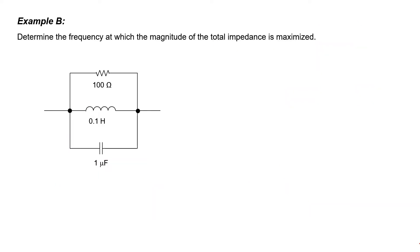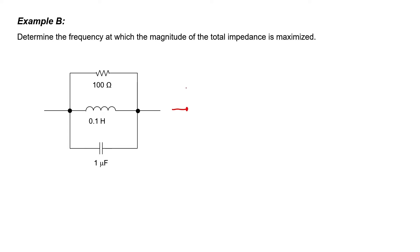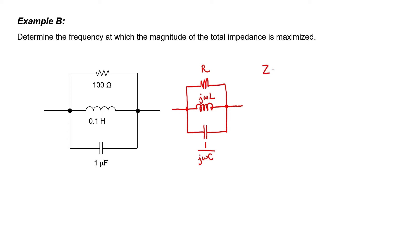In example B, we're asked to determine the frequency at which the magnitude of the total impedance is maximized. Impedance is a complex number and works just like resistance when you have components in parallel. Let's redraw this circuit in terms of impedances. The impedance of a resistor is R, the impedance of an inductor is j*omega*L, and the impedance of a capacitor is 1/(j*omega*C). Since impedances add in parallel the same way resistances do, the net impedance can be written as R in parallel with j*omega*L in parallel with 1/(j*omega*C).